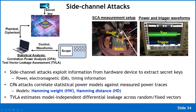Over the past few years, side-channel attacks have shown that by monitoring the current going into a die while encryption runs, you can build correlations between switching activity and key guesses. You guess the key, model the switching activity, and correlate against the measured current. If the key guess is correct, correlation is high; if wrong, it's low.